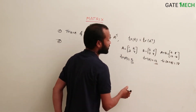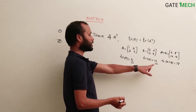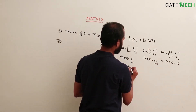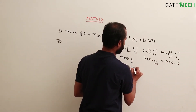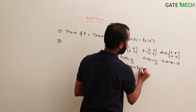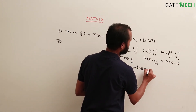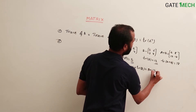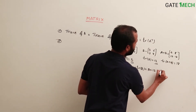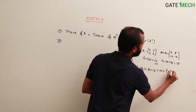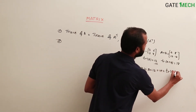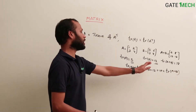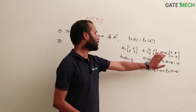Trace of A plus B is 18. Trace of A plus trace of B — trace of A is 5 and trace of B is 13, giving 5 plus 13 which is also 18. So trace of A plus B equals trace of A plus trace of B.